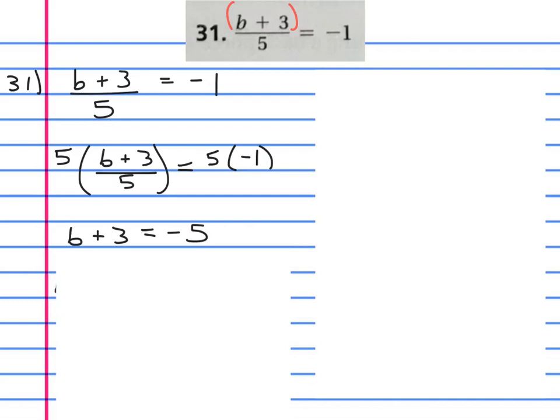What do we need to do now? We need to subtract three from both sides. We're going to write what was originally there: b plus three, and then minus three. On the other side, write what was originally there: minus five minus three.